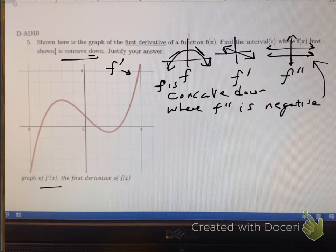Since this is f prime, its slope would be the derivative of what we have. And since we have f prime, its slope, or its derivative, would be f double prime. So this basically asks us what's the slope.